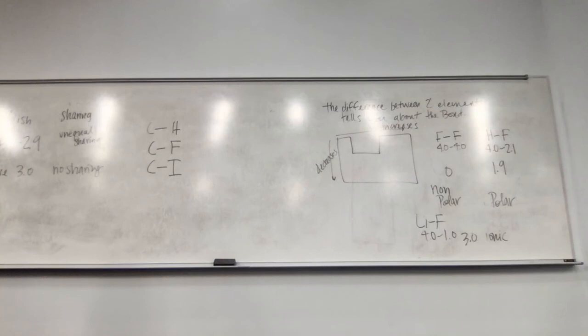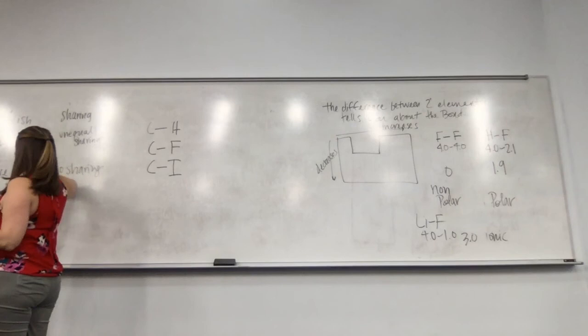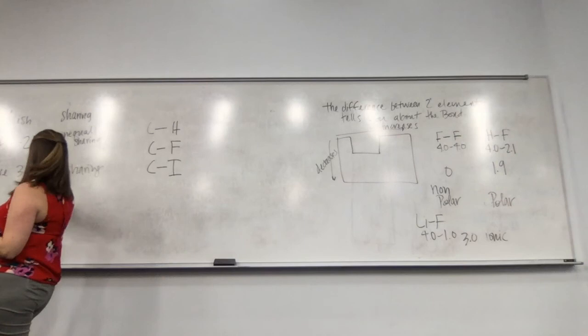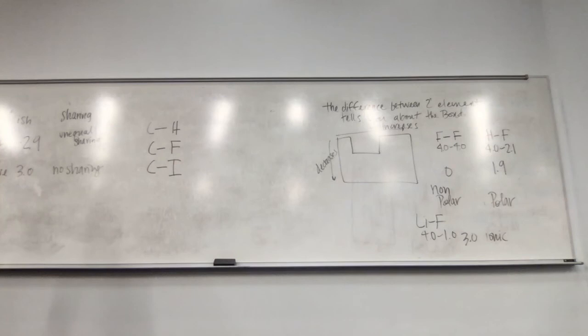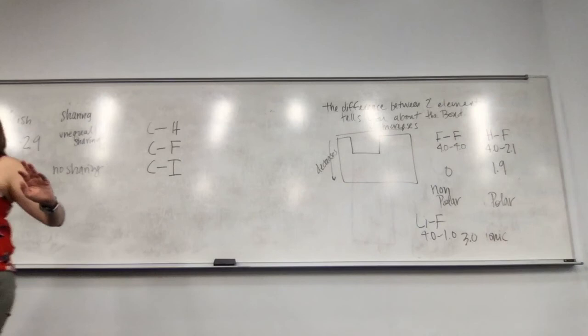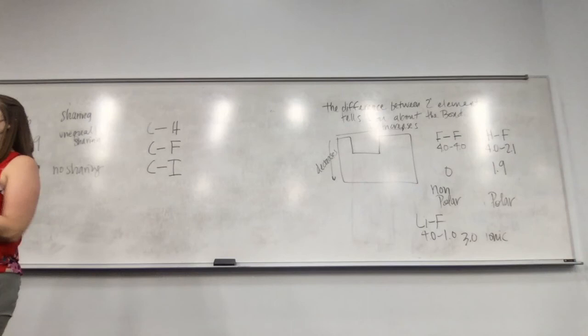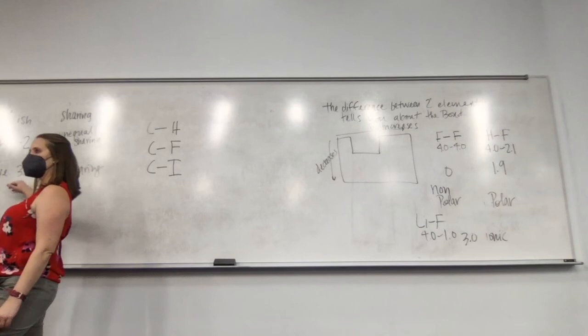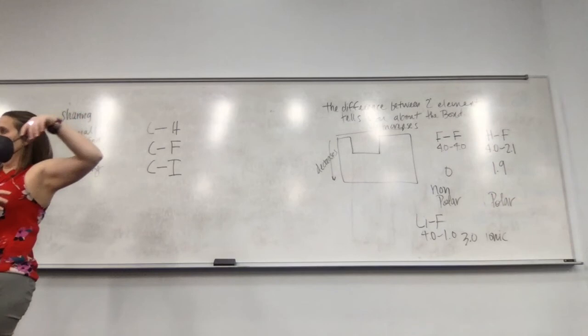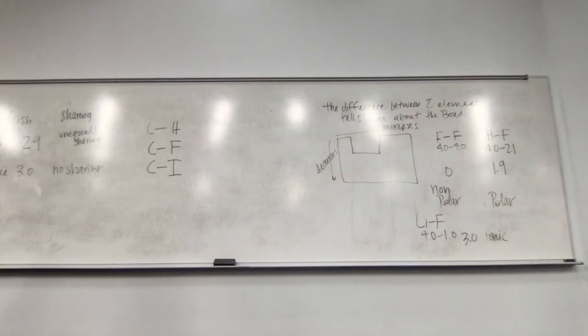Ionic bonds are non-sharing. Nonpolar is a difference near zero. Ionic bonds between metal and nonmetal should always be at or above 3 on the electronegativity difference scale. We will continue our discussion of polarity on Monday — how do we know which direction the electrons go and how do we calculate that? This is where mini-exam 5 stops. Have a fantastic weekend and I'll see you on Monday.